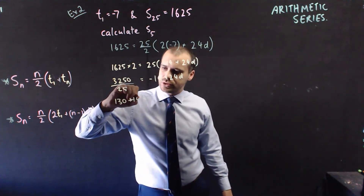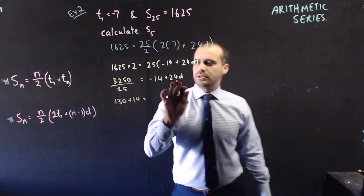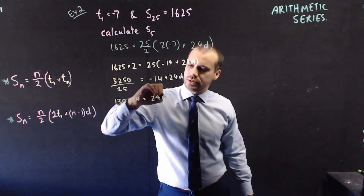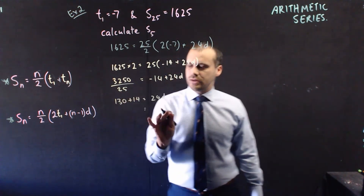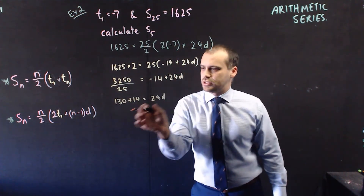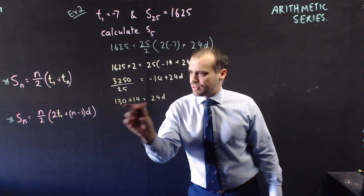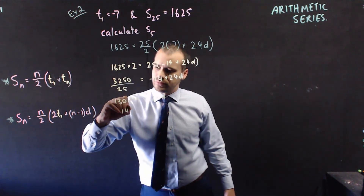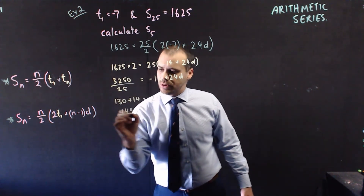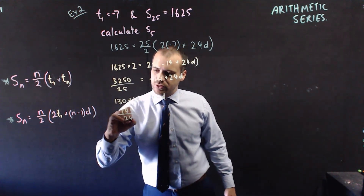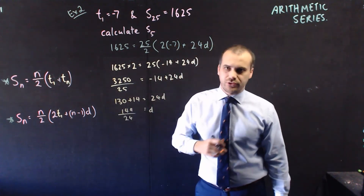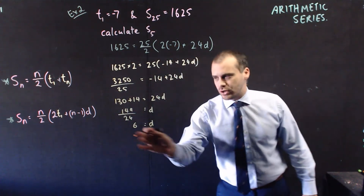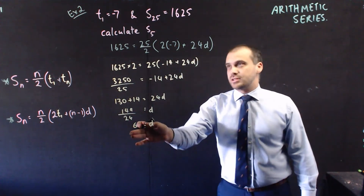I can now add that 14 to both sides — plus 14 — and I'm left with 24D. And of course I can divide — 144 by 24 — to get my common difference. And now I have a common difference of 6.